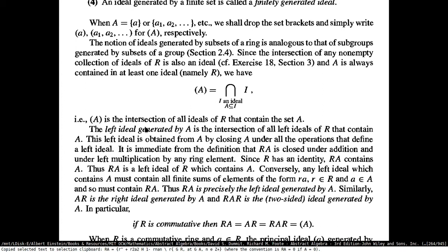For example, the left ideal generated by A is going to be the intersection of all left ideals of the ring R that contain A. This comes from the fact that the ideal generated by a set A can be written as the intersection of all the ideals of R which include the set A.